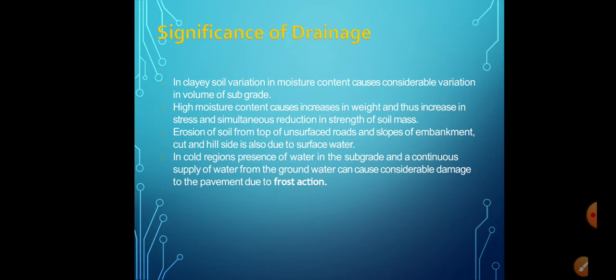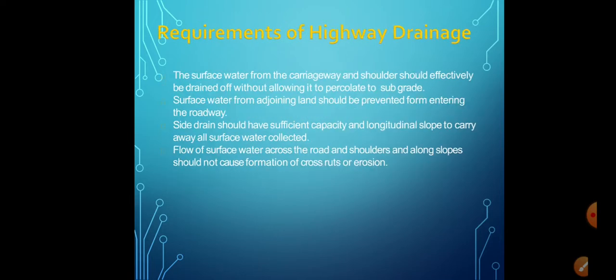It is important to have proper drainage systems. The requirements of the highway drainage system are: surface water from the carriageway and the shoulders should effectively be drained off without allowing it to percolate or filtrate into the subgrade and weaken the soil. Surface water from the adjoining land should be prevented from entering the roadside. Side drains should have sufficient capacity and longitudinal slope to carry away all surface water collected from the roadway.